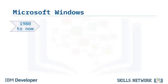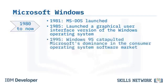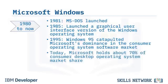PC-DOS and MS-DOS once existed, with MS-DOS launching in 1981. In 1985, Windows offered consumers a graphical user interface version written in variations of C language. In 1995, the debut of Windows 95 catapulted Microsoft's dominance in the consumer operating system market, with Microsoft holding about 70% of consumer desktop OS market share in 2021.